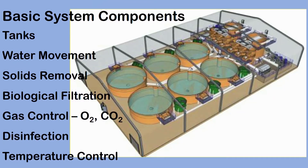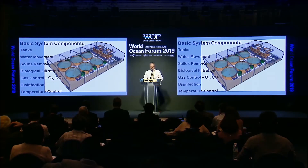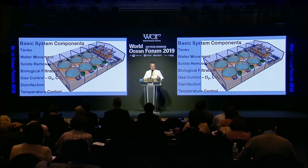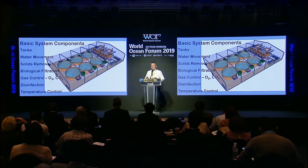As our previous two speakers presented, there's some basic system components to a RAS. There's the tanks. We have to move the water. We have to remove the solids. We have biological filtration for ammonia removal. We have to control our gases, which is our CO2 and the respiration of the fish, and we have to make sure there's adequate oxygen in the water, then there's disinfection and temperature control.